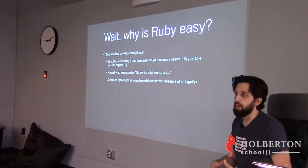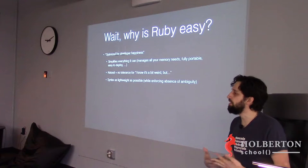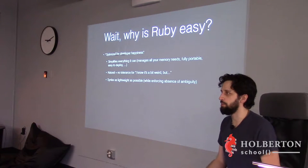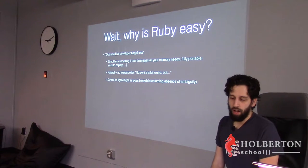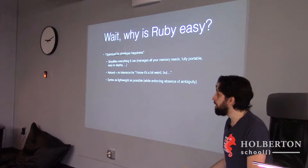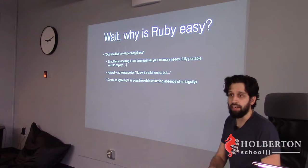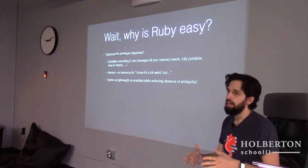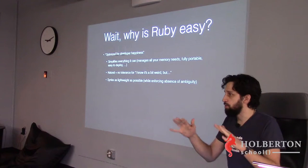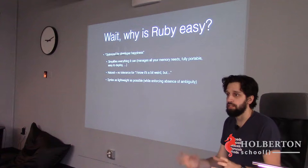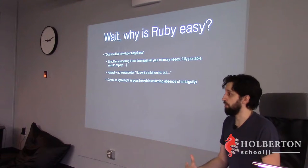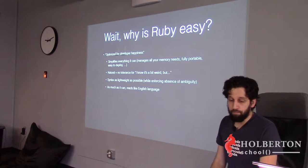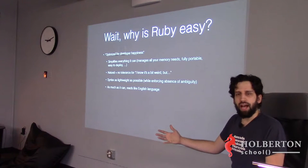The syntax is trying to be as lightweight as possible — and we'll see in the part where Ruby is 'too easy' that sometimes it goes a bit far. It's really trying to be so lightweight while still enforcing absence of ambiguity. It tries to get you not to hit any keystroke you don't need, but when your code is ambiguous it will tell you: 'this is not clear enough for me, please clarify.'